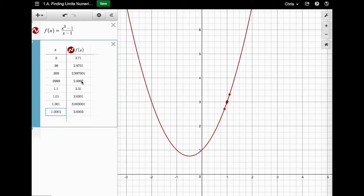for this function up here, this x³ - 1 over x - 1, it's getting closer and closer to three as your x is getting closer and closer to one from both sides. So if you have any questions about anything in this video, let me know.